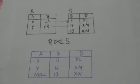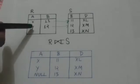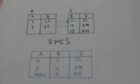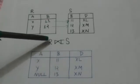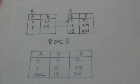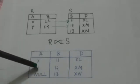For example, this is relation R, this is relation S, then the result of this right outer join operation is this relation.